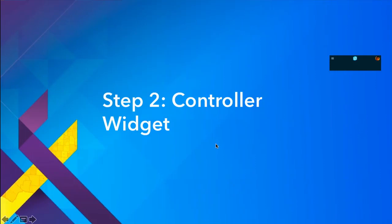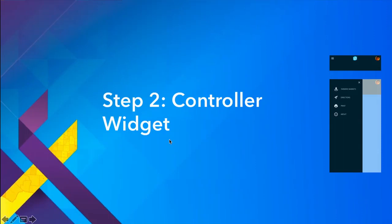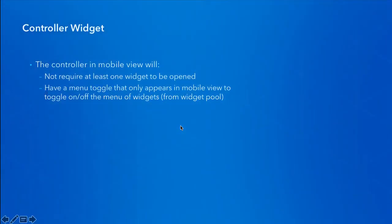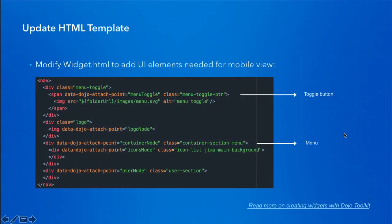Step two is for the controller widget itself. The changes to the controller in mobile view are: first, we are going to add JavaScript to make it not require at least one widget to be open, and we are going to add a menu toggle icon that will only appear in mobile view to toggle the menu on and off. We update the HTML template by adding a toggle button and a div for the menu which will contain all the widget icons.